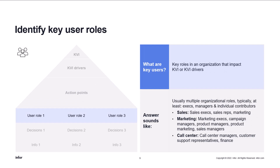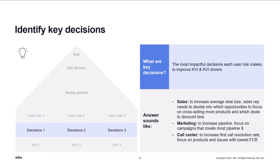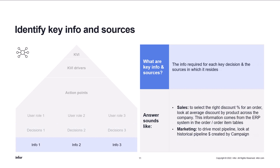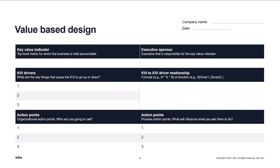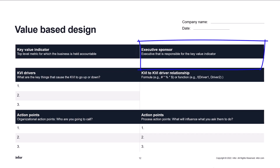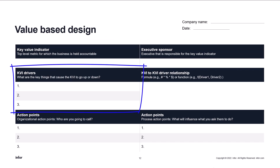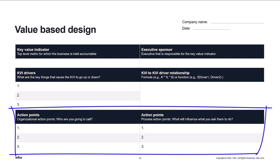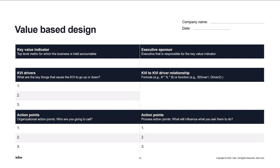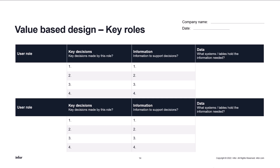Let's go through the rest of the house of value on a high level. We have the key role in an organization that impacts the KVI or KVI drivers, like our product manager. Then we have the decisions these roles need to make to improve the drivers and the KVI. And lastly, what information do we need to make these decisions and where can we find that data? We have a template where you can fill in all this information — starting with the key value indicator, then the executive sponsor, the drivers, the action points, user roles, key decisions they make, the information they need, and where that data is coming from.